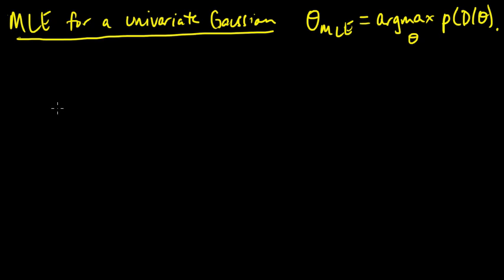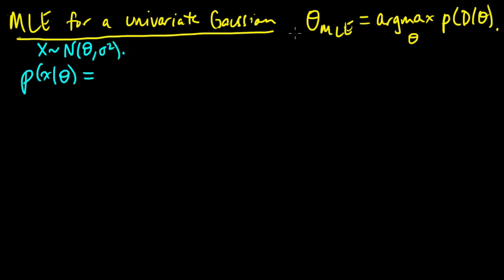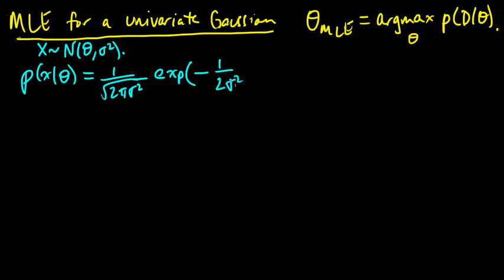So what is theta going to be in this case? Let's write down what the univariate Gaussian looks like. We're assuming that x is distributed normally with some mean — let's take theta to be the mean, sometimes we use mu, but let's use theta to be consistent. The PDF for x is 1 over the square root of 2π sigma squared, times exp of minus 1 over 2 sigma squared times (x minus theta) squared.